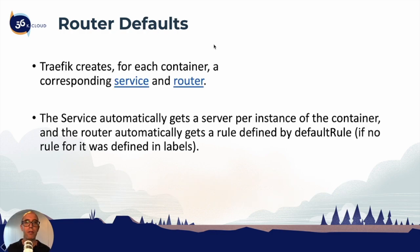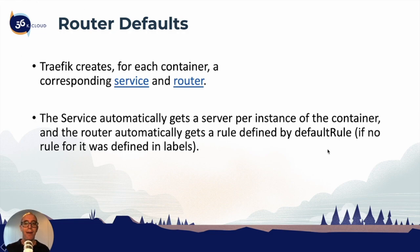The router defaults: every time we create a container in traefik, traefik creates a corresponding service and router automatically, so we don't have to do anything. If we just create a container attached to traefik, it will automatically assign a service and router — they may not be the right ones, just starting defaults. The service automatically gets a server per instance of the container, and the router automatically gets a rule defined by the default rule. That means when you restart a container with no rules assigned, traefik will assign a default rule, which could publish it or assign it to your default domain name. That's why we should define all these rules up front.